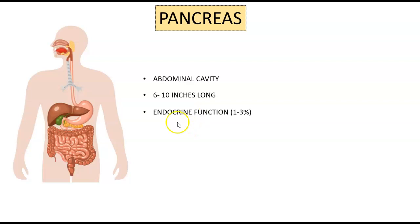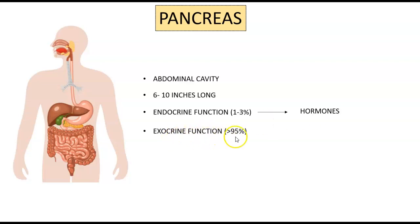The first is the endocrine function, making up 1 to 3% of pancreatic tissue, and deals primarily with releasing hormones that regulate blood sugar levels via insulin and glucagon. The second major function is the exocrine function, making up 95% of pancreatic glandular tissue, and deals primarily with digestive enzymes released into the first part of the small intestine to break down carbohydrates, fats, and proteins.